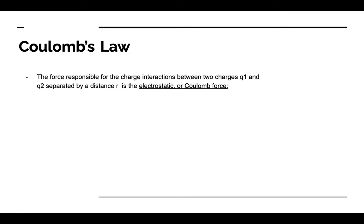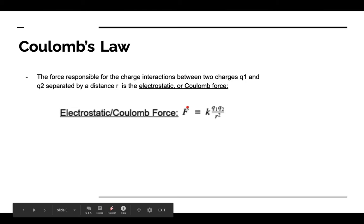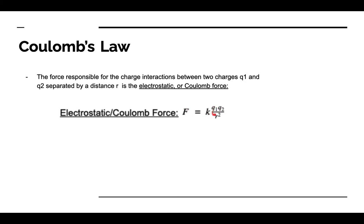Coulomb's Law: the force responsible for charge interactions between two charges Q1 and Q2 separated by distance r is the electrostatic or Coulomb force. It was first written down by the French physicist Coulomb, and it models the observation that like charges repel while opposite charges attract. The law states that the electrostatic force equals K·Q1·Q2/r², where the Coulomb constant K = 9.0 × 10⁹ N·m²/C² — a constant of proportionality used to fix the electrostatic force throughout the universe.